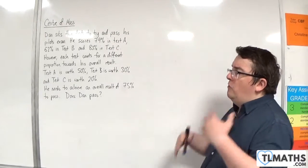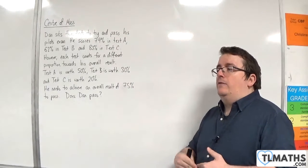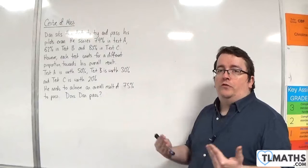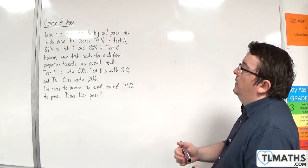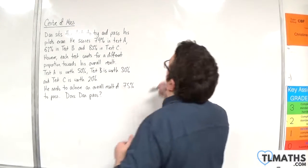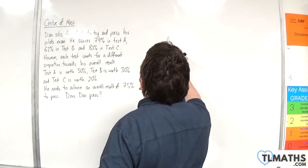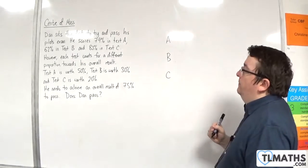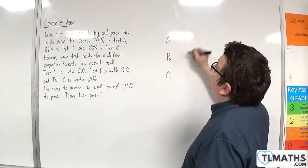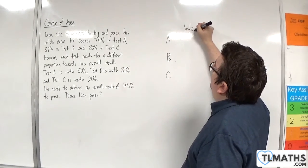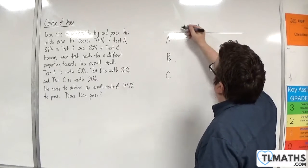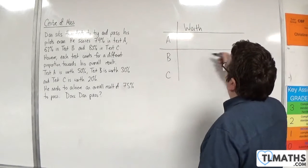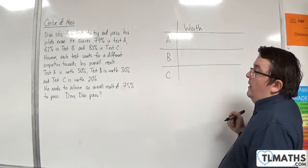So we're going to approach this question in a very similar way to how we're going to approach finding the centre of mass of objects. We're going to think of test A, B and C separately. Each of these tests has a percentage worth that they're worth towards the overall result.